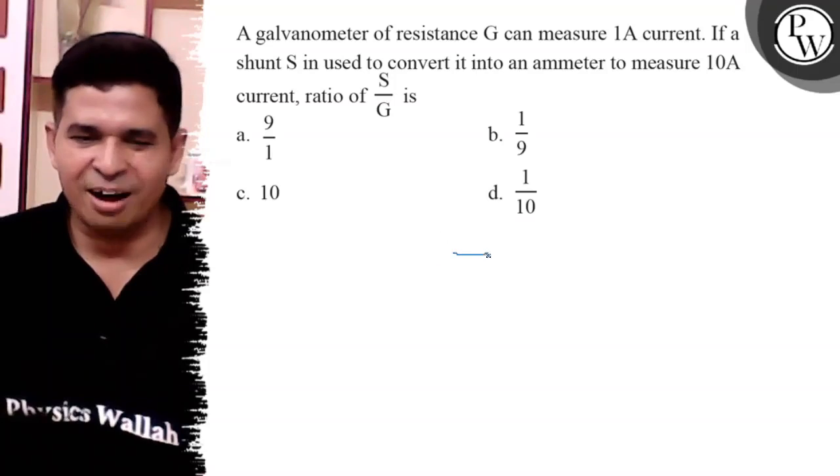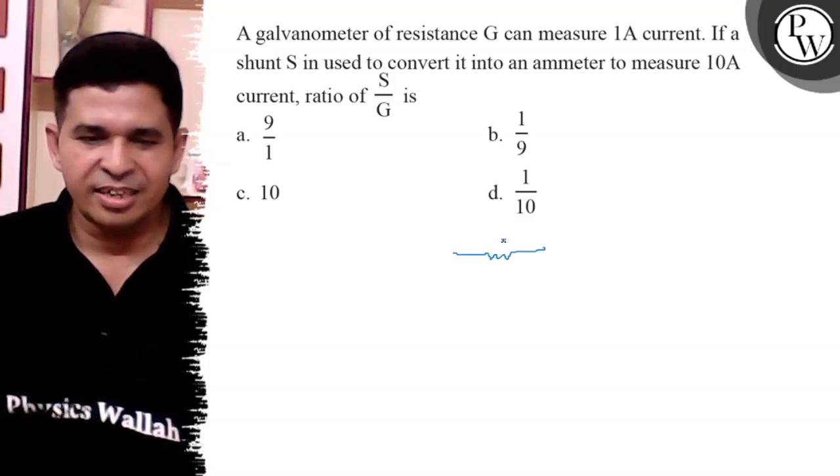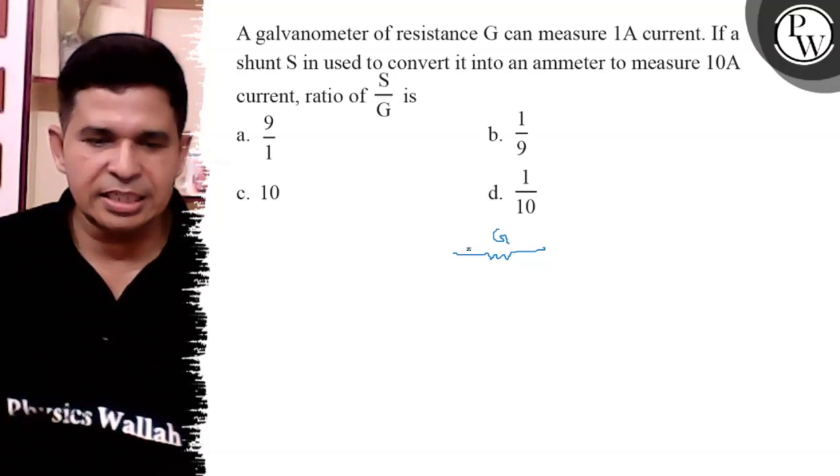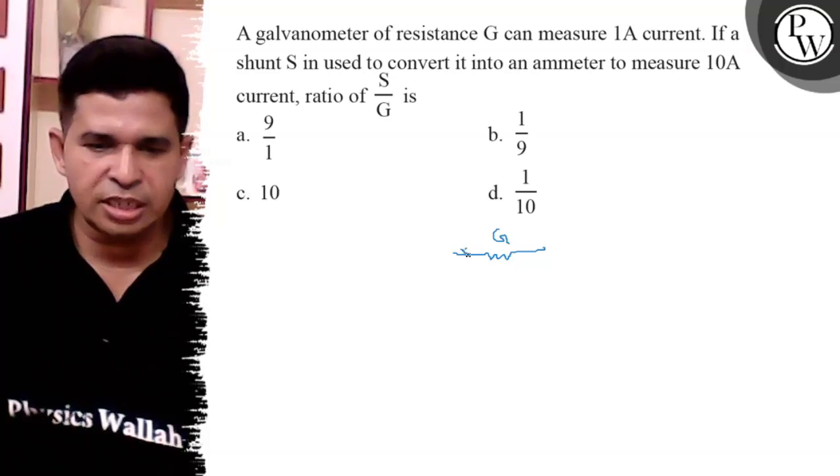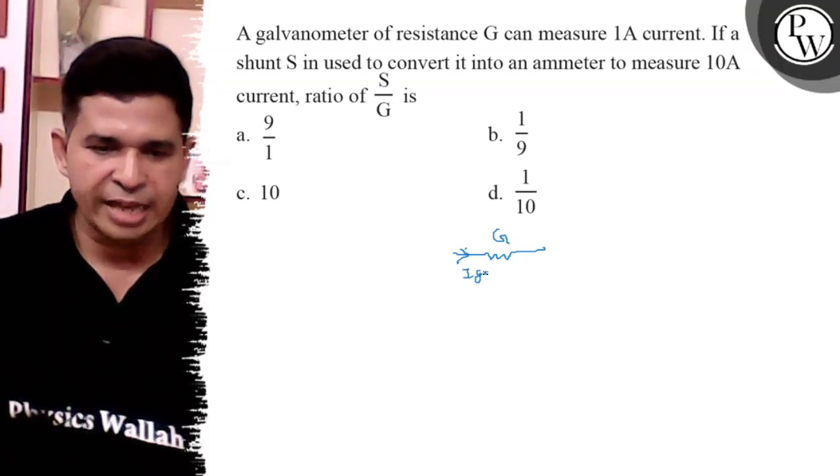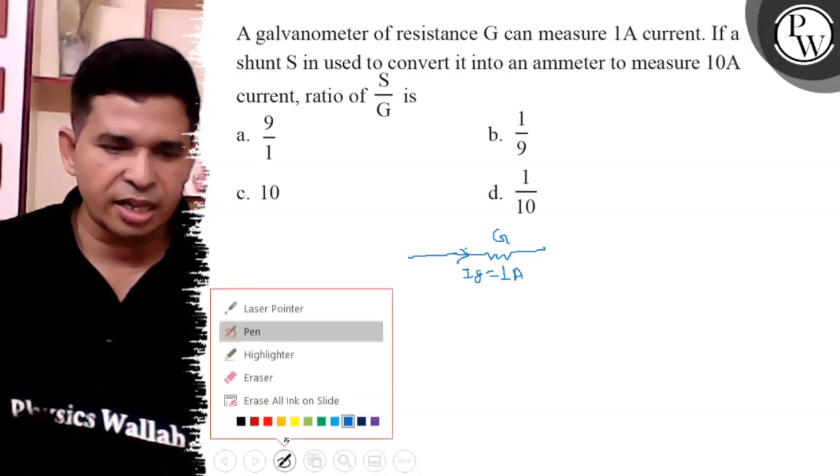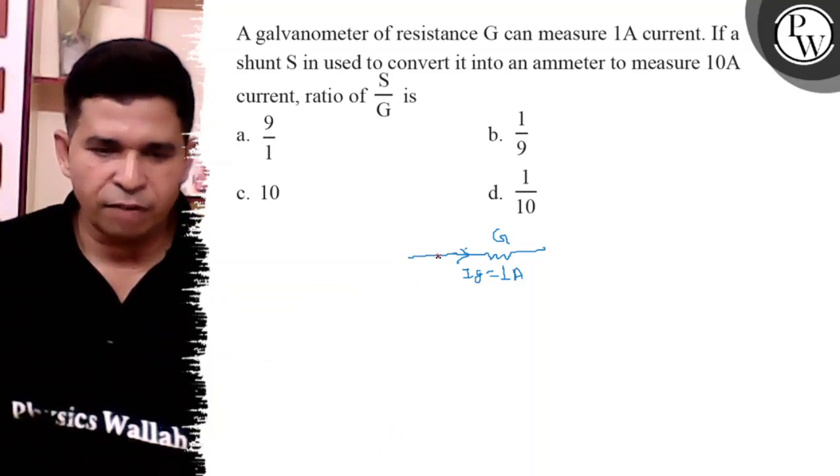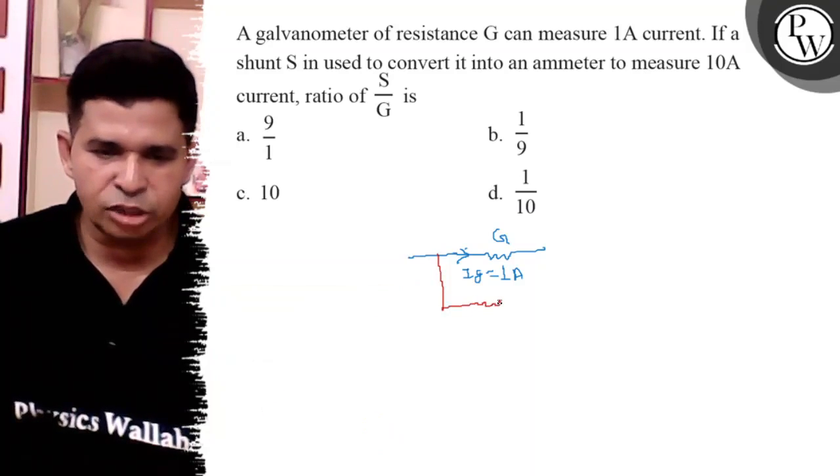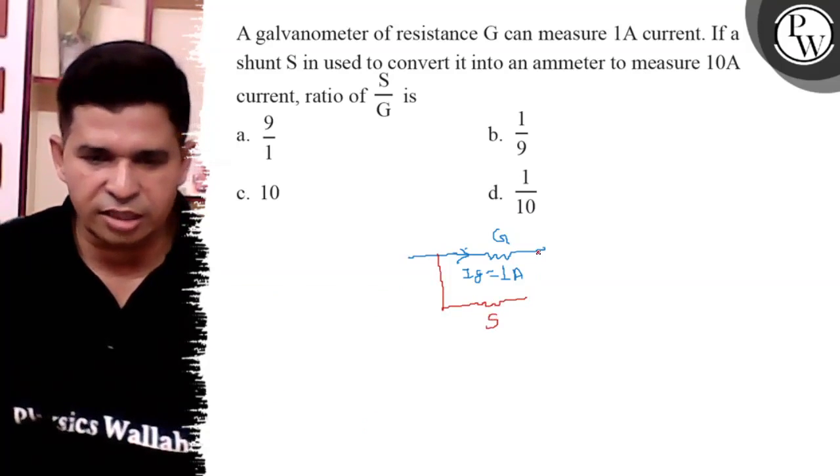First, make the diagram. It is the galvanometer of resistance G, current is IG and the value of IG is given 1 ampere. Now, a shunt is connected in parallel to it, then what happens? Its range is increased. It is the shunt resistance.